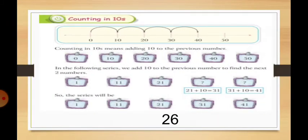In your book, page number 26, there is a concept on counting in 10s. The starting number is 0. 0 plus 10 equals 10. 10 plus 10 equals 20. 20 plus 10 equals 30. 30 plus 10 equals 40. So counting in 10s means adding 10 each time.